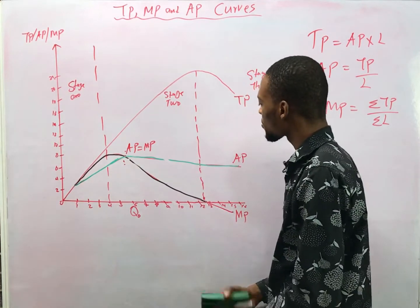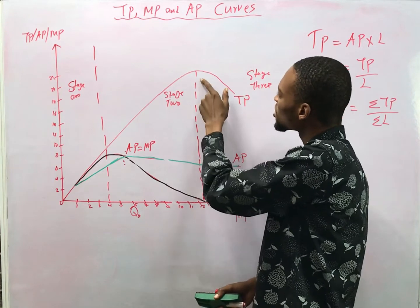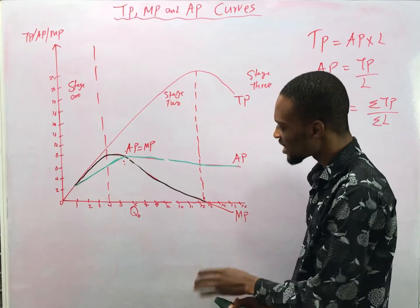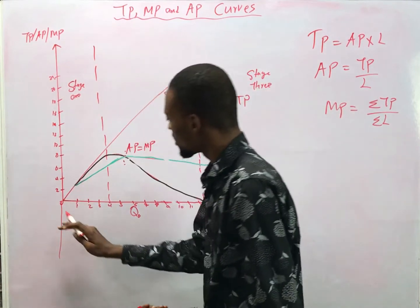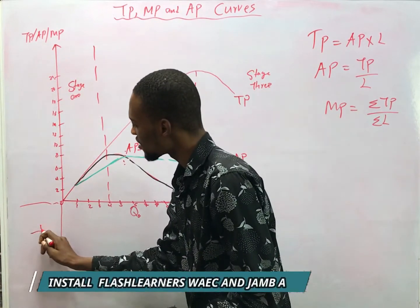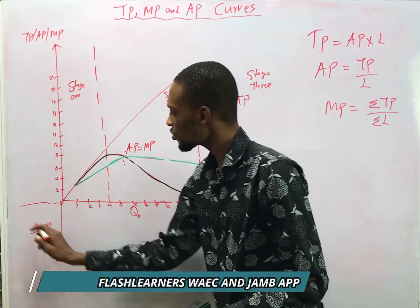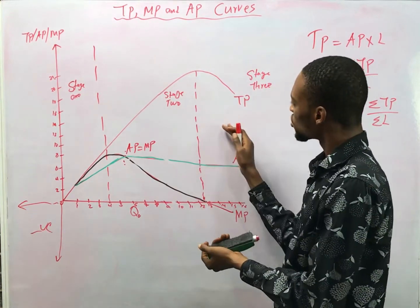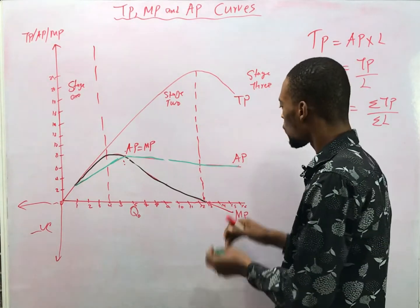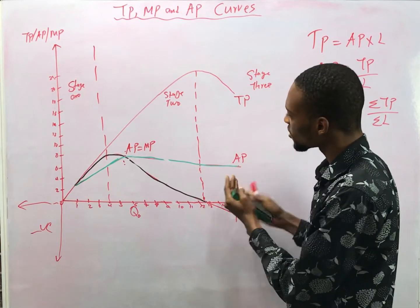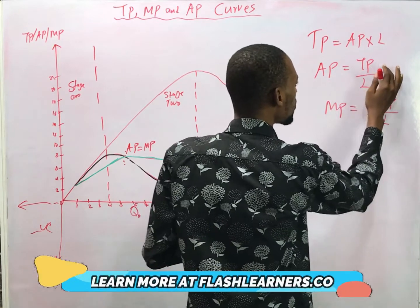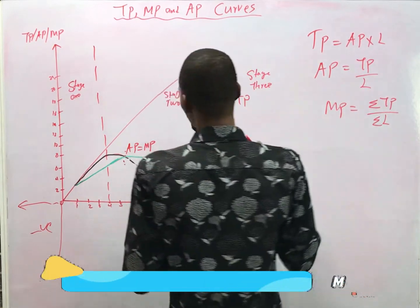As the total product drops, the marginal product becomes negative. In this graph, above the x-axis is positive and below is negative. So as total product begins to drop, marginal product tends to be negative. The average product hardly gets to zero because it is the total product divided by the inputs, so it remains above zero.